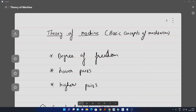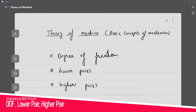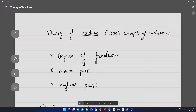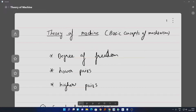Hi there everyone, my name is Preetam and I welcome you all to this channel. In this series on Theory of Machine, today we're going to discuss some basic concepts of mechanism — specifically degree of freedom, lower pairs, and higher pairs. If you want to check our last video on kinematic links and their types, I will provide the link in the description, along with the full playlist on Theory of Machine.